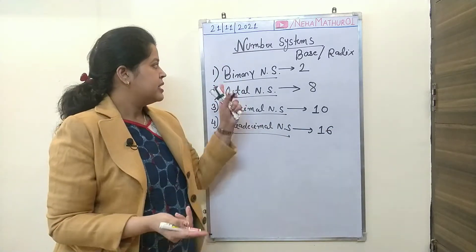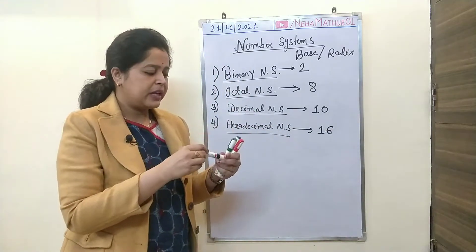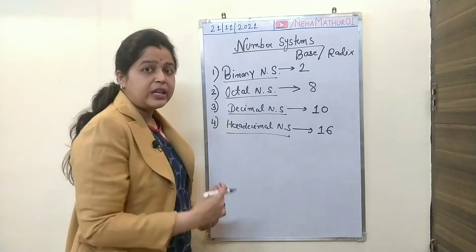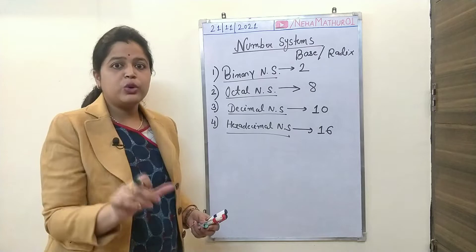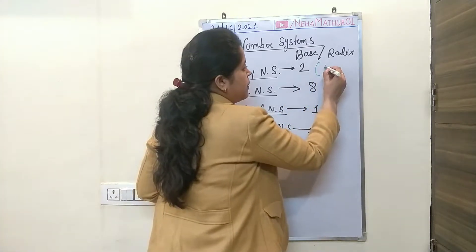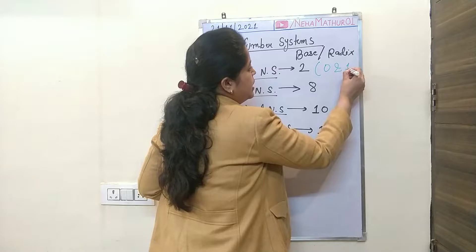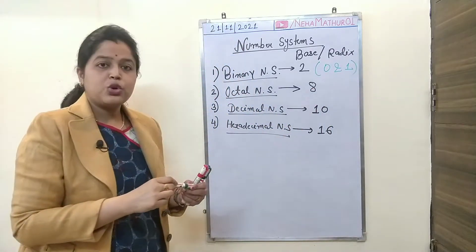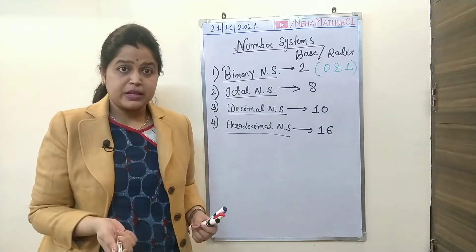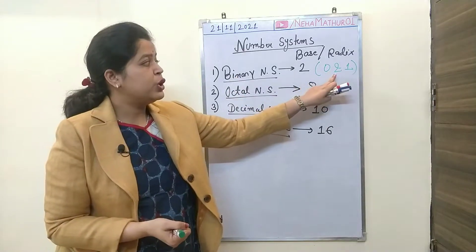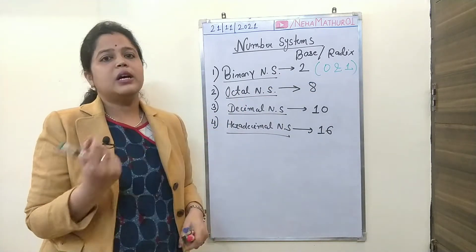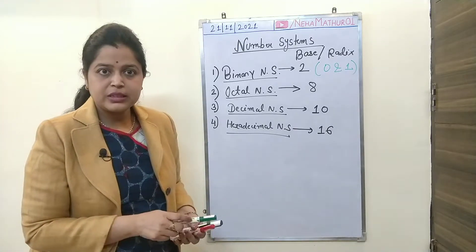Since for binary number system the base is two, that means we can represent our information in the form of zero or one only. So any information represented in the form of zero and one, having base two, comes under the category of binary number system.